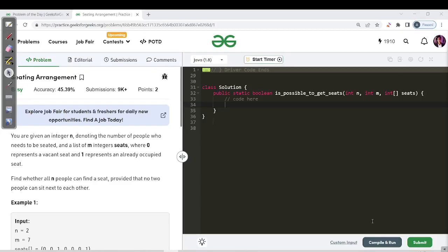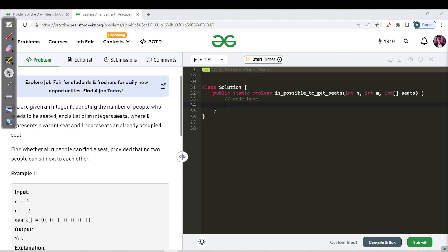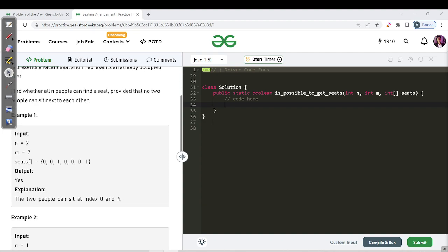So hello everyone, this is Aksha here and let us proceed with today's question of day 186. Today's question name is seating arrangement. So here the question says that we are given an integer n denoting the number of people who need to be seated on a list of m integer seats, where 0 represents a vacant seat and 1 represents an already occupied seat. We just have to check whether all n people can find a seat provided that no two people can sit next to each other.